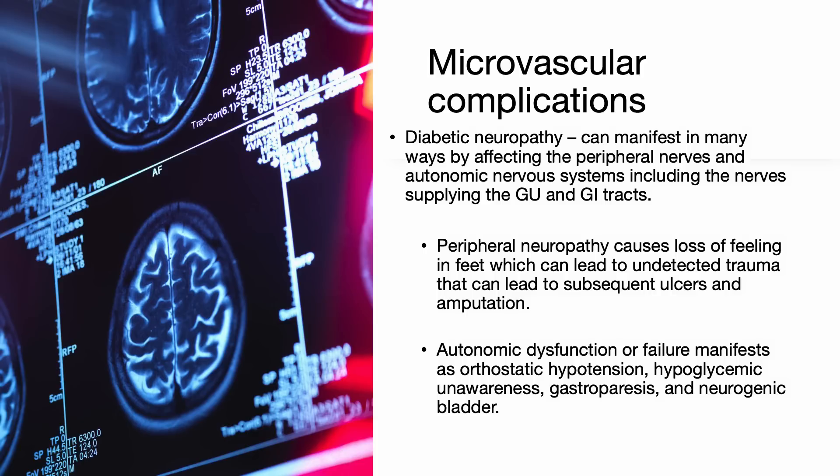Peripheral neuropathy causes loss of feeling in the feet, which can lead to undetected trauma and subsequent ulcers and even amputation. Autonomic dysfunction or failure manifests as orthostatic hypotension, hypoglycemic unawareness, gastroparesis, and neurogenic bladder.